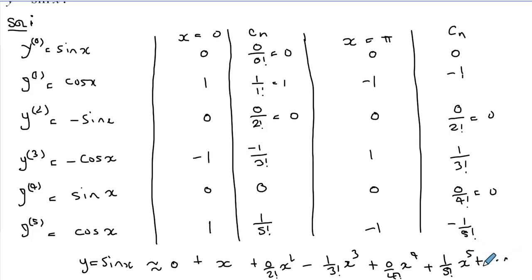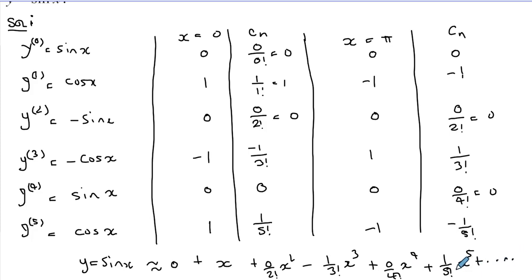These dots are very, very important when you write this series. If you stop without them you give the wrong message — saying it is a polynomial — but with those dots you communicate that you are dealing with an infinite sum, which is actually a series.